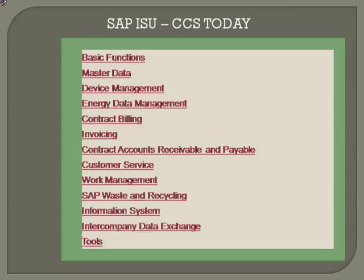Subsequently, SAP ISU CCS was modified to include many additional components. The original ISU CCS provided components like regional structures and master data, which is divided into two categories: business master data and technical master data. ISU CCS also has FICA — Financial Accounting for Contracts, Accounts Receivable and Payable. The FICA module is designed exclusively for three specific vertical industries: utilities, insurance, and telecom.